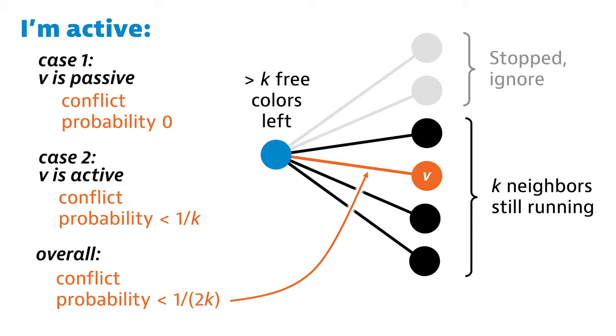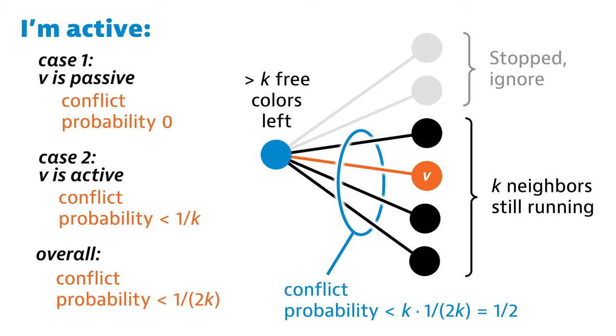This was for a specific neighbor v. I've got k neighbors, and using the union bound, we quickly get that the probability that at least one of them conflicts with me is less than k times 1 over 2k, which is less than 1/2.